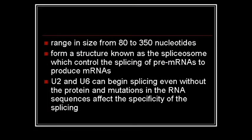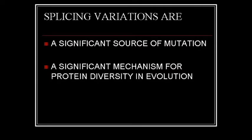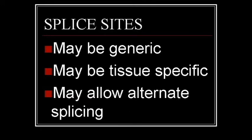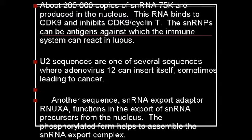The alternate splicing which is allowed at the spliceosomes is an important source of both protein diversity for evolutionary purposes and also for mutations. And so the snRNAs, or small nuclear RNAs, perform a vital function in cells as a component of the spliceosomes, which splices the genetic message into functional bits.